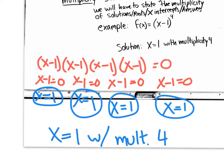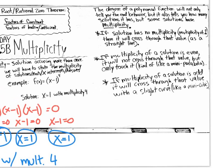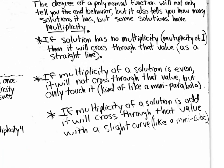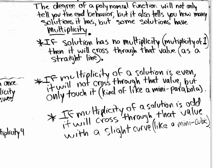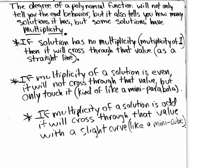It's very important to state the multiplicity of an answer when there is multiplicity. The key rules are: if the solution has a multiplicity of one, it will cross through that x-value like a straight line. If the multiplicity of a solution is even, it will not cross through that value but only touch it, kind of like a mini parabola.